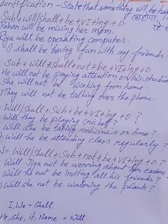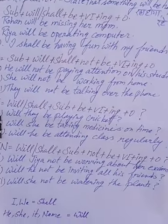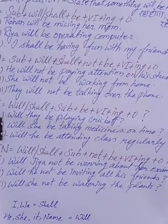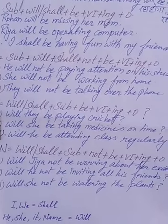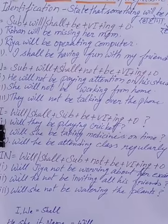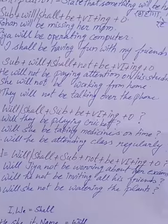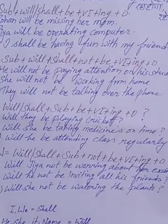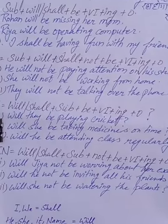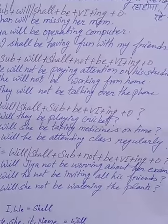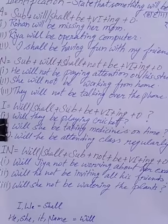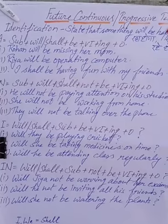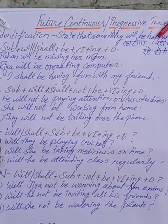For practice, take one sentence and transform it into all four types. For example: Rohan will be missing his mom. Negative: Rohan will not be missing his mom. Interrogative: Will Rohan be missing his mom? Interrogative negative: Will Rohan not be missing his mom? Just pick one sentence and convert it into four. Try to speak as much English as you can.